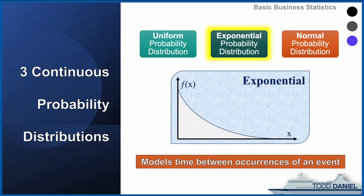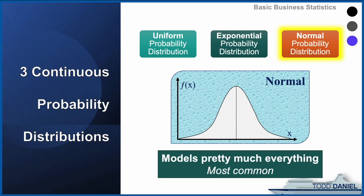Second, we are going to learn the exponential probability distribution, which models the time between occurrences of an event. If you're thinking that sounds like a Poisson distribution, you're close — and I'm going to distinguish between the two. Third, we are going to learn about the most important distribution in all of statistics: the normal probability distribution. This models pretty much everything, and it is the most common distribution we will use in our course. So with that, let's get started learning about probability distributions for continuous random variables.